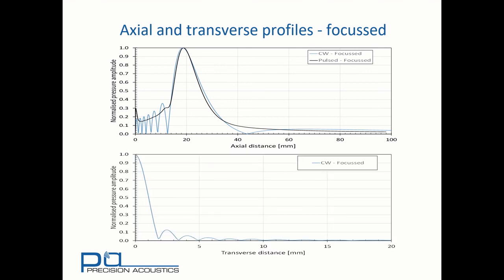A similar trend can be seen when we look at the transverse profile. Here, the side lobes are clearly evident for the continuous wave case, but for the pulsed wave case, we have a simple monotonically decreasing function.